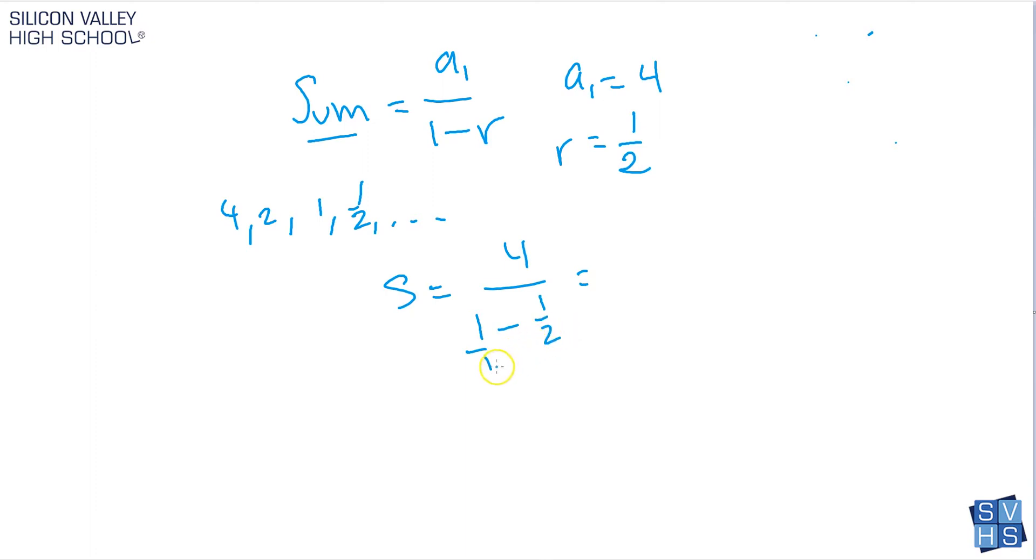Looks like, to me, the common denominator would probably be 2. So times 2 to the bottom. Whatever you do to the bottom, we have to do the top. So then on the bottom we have 2 over 2 minus 1 over 2, which is 1 over 2. So this is 4 over 1 half.